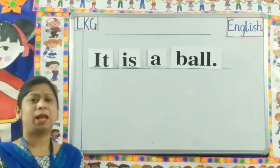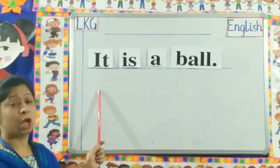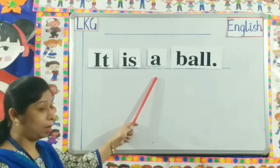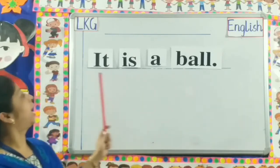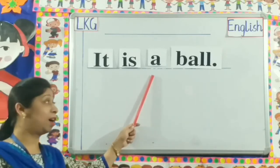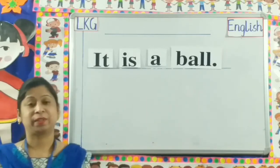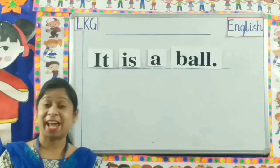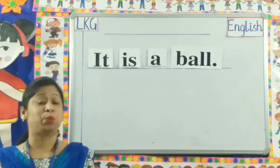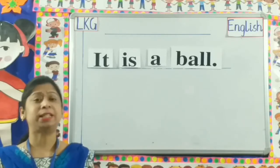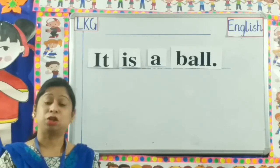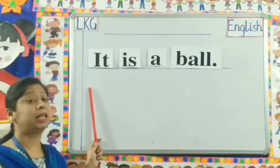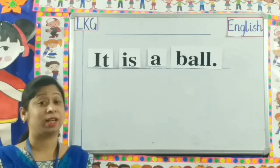Now let us read these words once again. It is a ball. It is a ball. Are these words making any sense? Yes, these words are making complete sense. Now children, a group of words like this, which makes complete sense, is called a sentence.